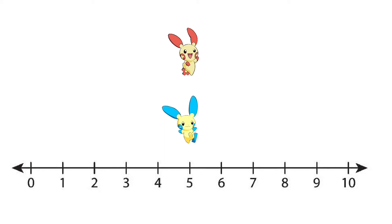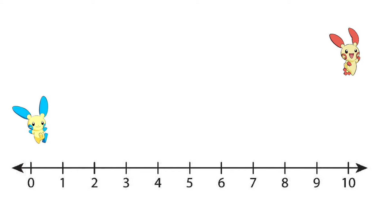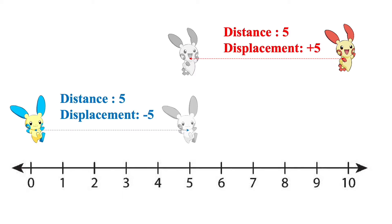Both Pikachus are now at x equals 5. Pikablu goes from x equals 5 to x equals 0, and the red one goes from x equals 5 to x equals 10. The red Pikachu went a distance of 5 and moved in the positive direction, so his displacement is positive 5. Displacement is a vector, so it must have a direction — in one-dimensional motion along the x-axis, that direction is positive or negative. The blue Pikachu also went a distance of 5, but in the negative direction, so his displacement is negative 5.